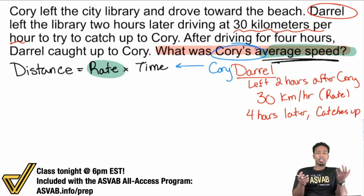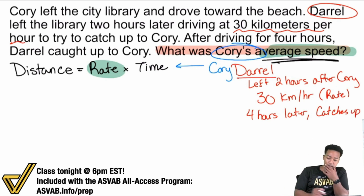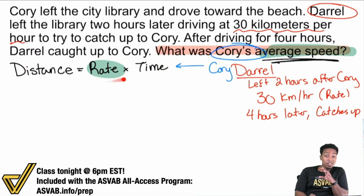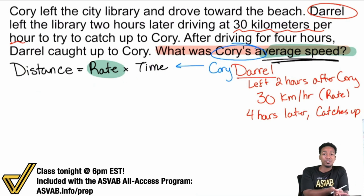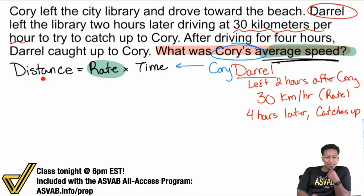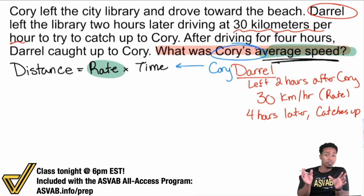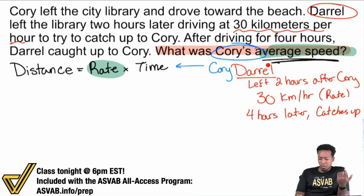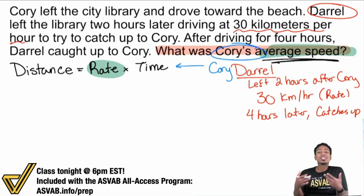So, what does this information all mean? You're probably saying: I don't have a distance, I don't have a time for Corey. If we're focusing specifically on Corey — that's the man of the hour — if I had the distance and the time, I could solve for the rate. But we've read all this information and it's all about Daryl. How do we use it?